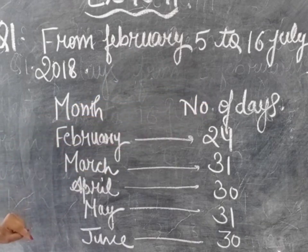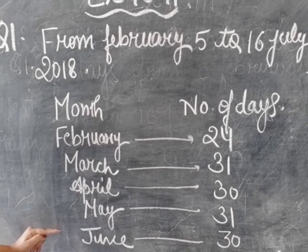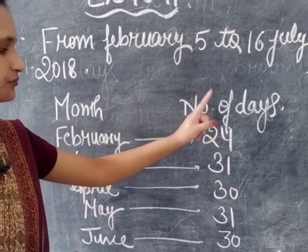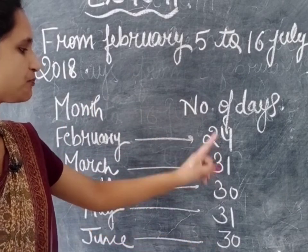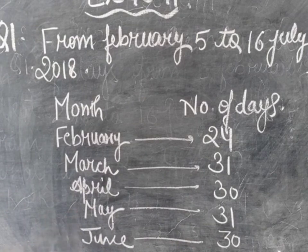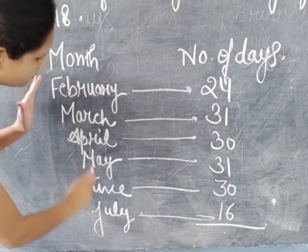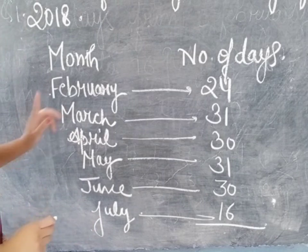Here you have to write the months from February to July. From February to July you have to write February, March, April, May, June, July. And here you have to write the number of days of these months. Now here we have written the months from February to July.